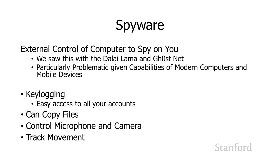Spyware is particularly problematic on modern computers and mobile devices because of their specific capabilities. It's always been very problematic, but now more than ever it's really a problem. One thing spyware can be used for is key logging — it tracks all of your keystrokes. So if you go to your bank, it's going to keep track of your username and password as you type them in.